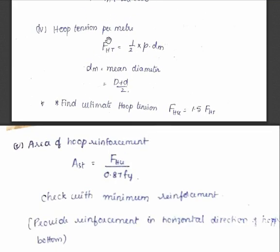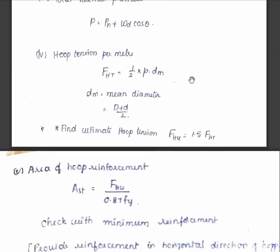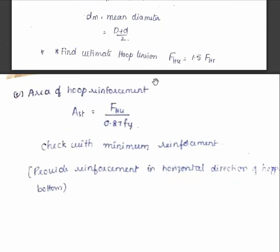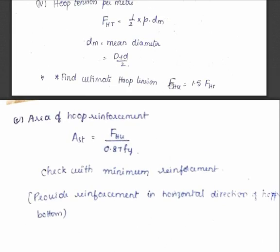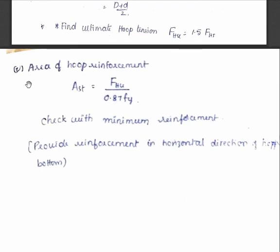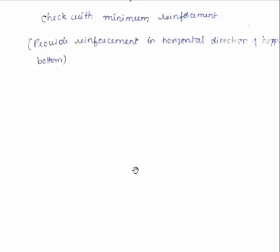The hoop tension is given by: FHD equals half into P into DM, where DM is the mean diameter (capital D plus small D by 2). The ultimate hoop tension is obtained by multiplying by the factor of safety 1.5. The area of hoop reinforcement is FHU divided by 0.87 Fy. This reinforcement is provided in the horizontal direction as distribution reinforcement. We have to check with the minimum reinforcement of 0.12% of the cross-sectional area.